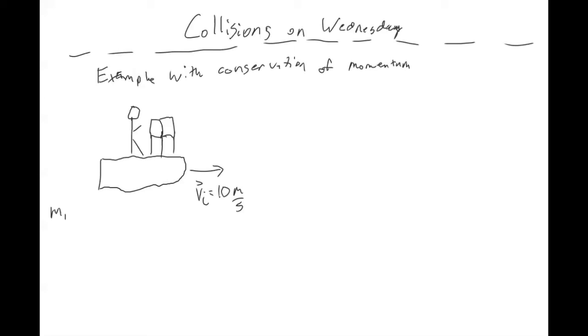So initially you have some velocity, let's say 10 meters per second. And the mass of the boat plus the person is, I don't know, 200 kilograms. And let's say the mass of the boxes is 50 kilograms.